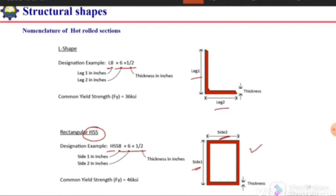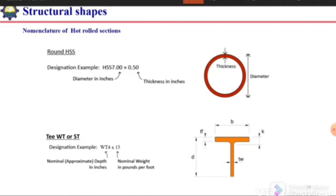For hollow structural sections with a circular cross-section, we use the letters HSS followed by two numbers. The first number indicates the diameter of the section and the second number indicates the wall thickness.